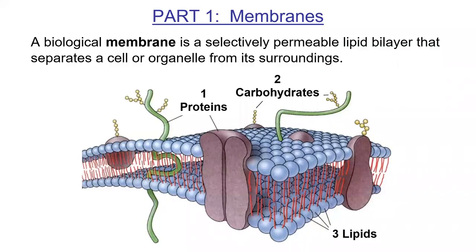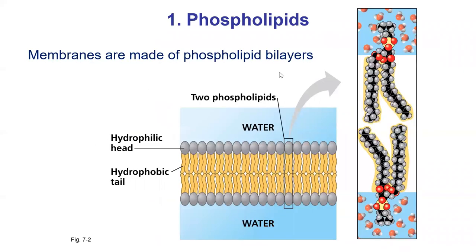Let's talk about membrane parts. We've discussed macromolecules, so now I want to talk about how they're put together in a membrane — proteins, carbohydrates, and phospholipids. First, the phospholipids. This is the structural basis of the biological membrane.